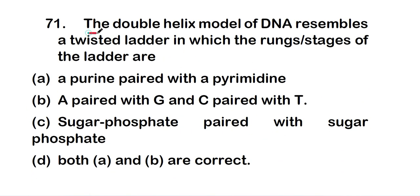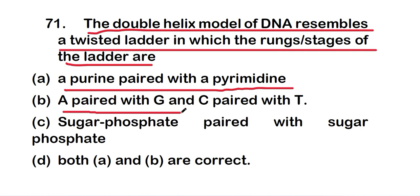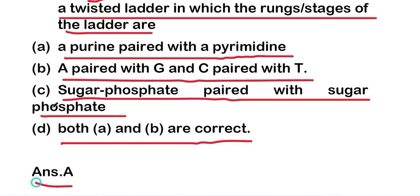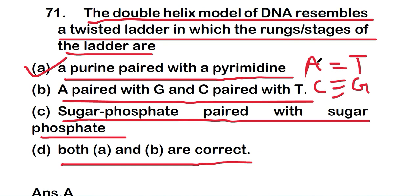Question 71: the double helix model of DNA resembles a twisted ladder in which the rungs of the ladder are — option A, a purine paired with a pyrimidine; option B, adenine paired with guanine and cytosine paired with thymine; option C, sugar-phosphate paired with sugar-phosphate; or option D, both A and B. The right answer is option A. Like adenine paired with thymine (purine-pyrimidine) and cytosine paired with guanine — in each rung, a purine pairs with a pyrimidine.